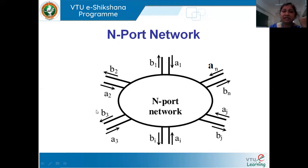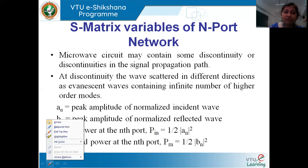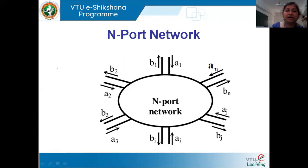At each port, suppose we have given some incident signal. The wave taken from the source to the device is the incident wave, written in terms of A. The reflected wave is written as B. So A is the incident wave and B is the reflected wave.